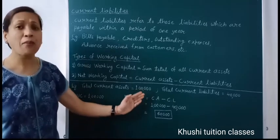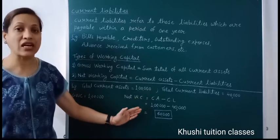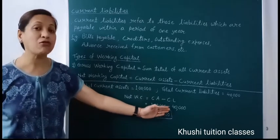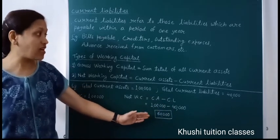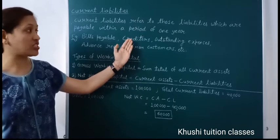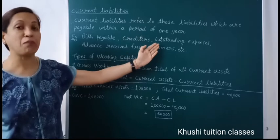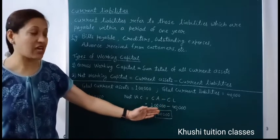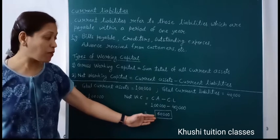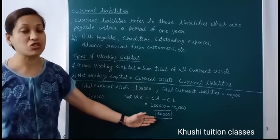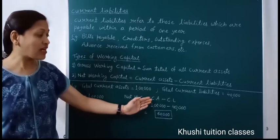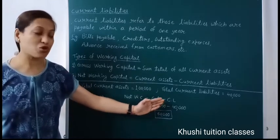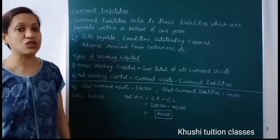The meaning of net working capital is: we need to hold 1 lakh of current assets in the business for day-to-day activities. Out of this, 40,000 rupees have been arranged from current liabilities — like purchasing goods on credit creates creditors, or keeping expense payments pending creates outstanding expenses. The remaining 60,000 rupees must be arranged from long-term sources. So current assets are financed through current liabilities as well as long-term sources of finance.